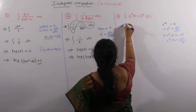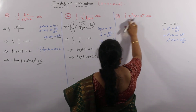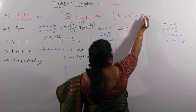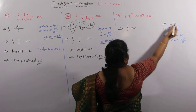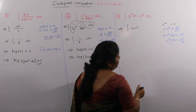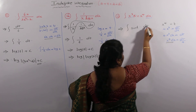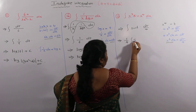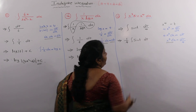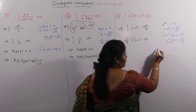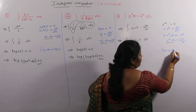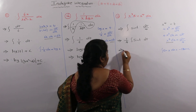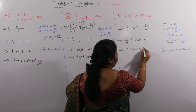Substituting here: x⁴ is replaced by T and x³ dx is replaced by dT/4. Since 1/4 is a constant, we get (1/4) · integral of sin(T) dT. We have the formula: integral of sin(T) dT is equal to -cos(T) + C. So the result is (-1/4) cos(T) + C.